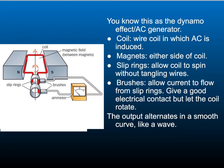It consists of slip rings to allow the coil to spin without tangling the wires. It has brushes which allow current to flow from the slip rings and give good electrical contact while letting them rotate. The output makes a smooth curve like a wave - an alternating current.